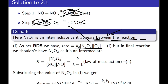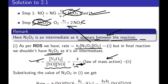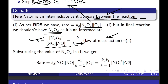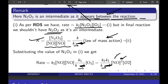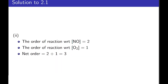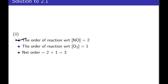In the final reaction we shouldn't have N₂O₂ as it is the intermediate, so for eliminating it we take help of the first equation. By chemical equilibrium, or the law of mass action, we have [N₂O₂] / ([NO][NO]) = K₁/K₋₁. Substituting the value of N₂O₂, we get the final rate equation: rate = K₂·(K₁/K₋₁)·[NO]²·[O₂]. The order with respect to NO is 2 and with respect to oxygen is 1, so the net order is 2 + 1 = 3.